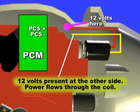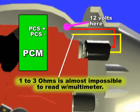You should see 12 volts minus 0.3 to 0.6 volts which is dropped by the solenoid coil itself. It is useless to perform a resistance reading since these units are between 1 to 3 ohms, which is virtually impossible to read using a normal multimeter.